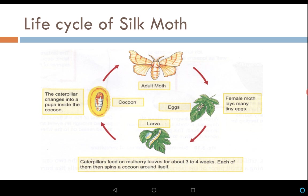We have now talked about various types of natural fibers and artificial fibers: cotton, jute, silk, rayon, nylon, polyester, acrylic, and others. Now let us talk about the life cycle of the silk moth.